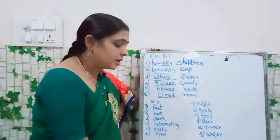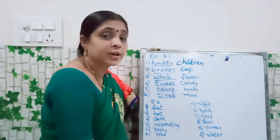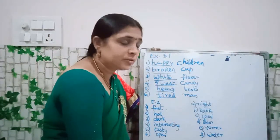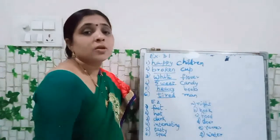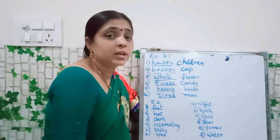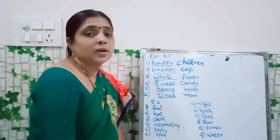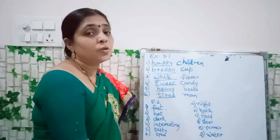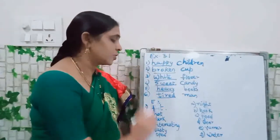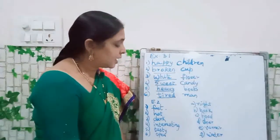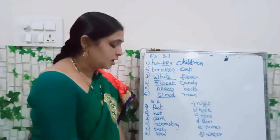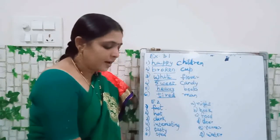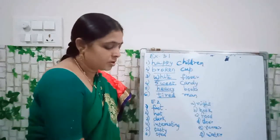Next one: sweet candy — S-W-E-E-T, candy, C-A-N-D-Y. Next: heavy books — H-E-A-V-Y, B-O-O-K-S, heavy books. Next one: tired man — T-I-R-E-D, M-A-N. So the answers are: happy children, broken cup, white flower, sweet candy, heavy books, and tired man.